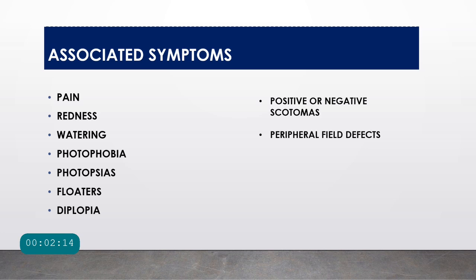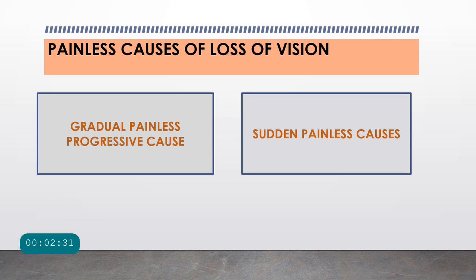When a patient presents with diminution of vision, you have to determine whether it is associated with pain, redness, watering, photophobia, photopsias, floaters, diplopia, positive or negative scotomas, or peripheral field effects. All these will be covered in subsequent lectures.